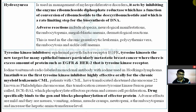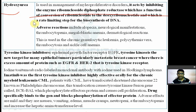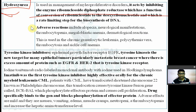Carboplatin is another analogue of cisplatin and is less toxic. Hydroxyurea is used in the management of myeloproliferative disorders. It acts by inhibiting the enzyme ribonucleotide diphosphate reductase, which is responsible for the conversion of ribonucleotides to deoxyribonucleotides — a rate-limiting step in DNA synthesis.